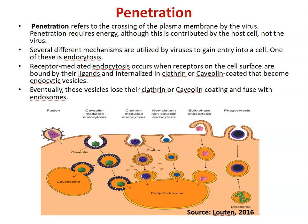Endocytosis is a receptor-mediated process. It occurs when receptors on the cell surface are bound to their ligands and internalized in clathrin- or caveolin-coated vesicles that become endosomes. Eventually, these vesicles lose their clathrin or caveolin coating and then fuse with endosomes.